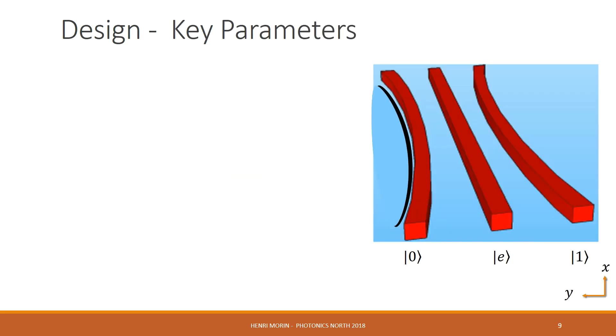Now, I'll go over a couple key design parameters for our waveguides. On the schematic, we have our zero, excited, and one waveguides. The first parameter is the bending coefficient. This ensures cyclic evolution. It has a value of about 20 per meter inverse, which is equivalent of a change in the y-axis of about 500 nanometers, which takes place over 150 microns in the x-direction.